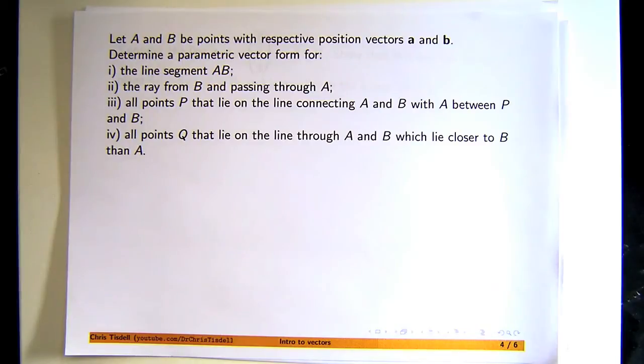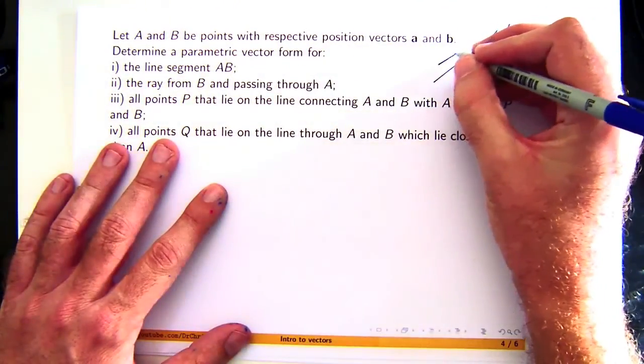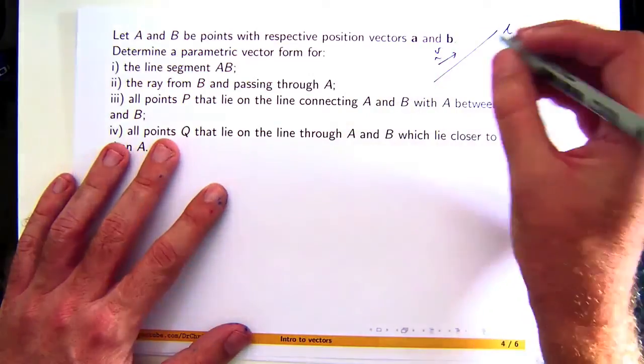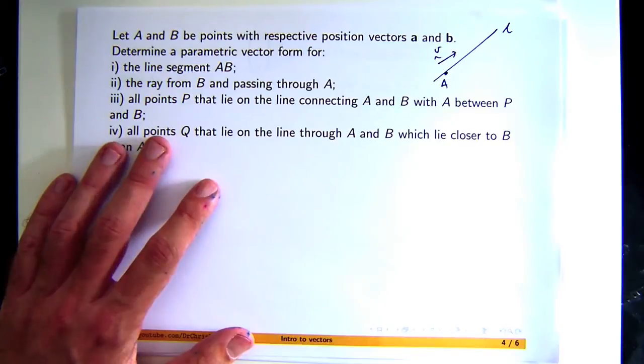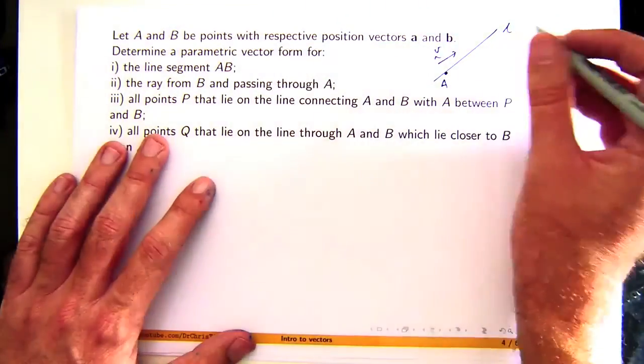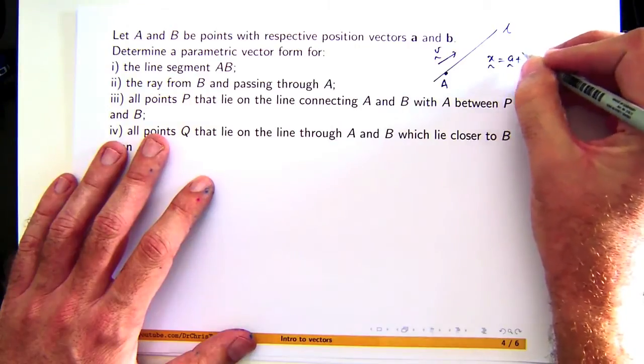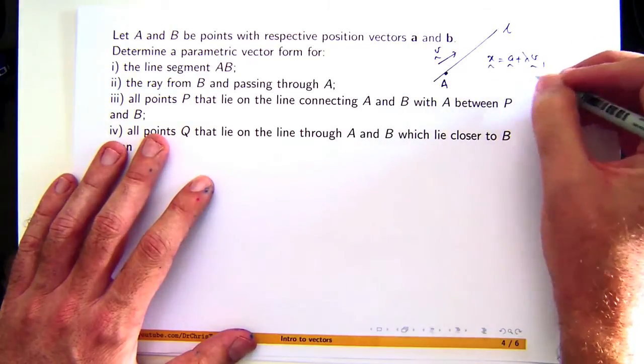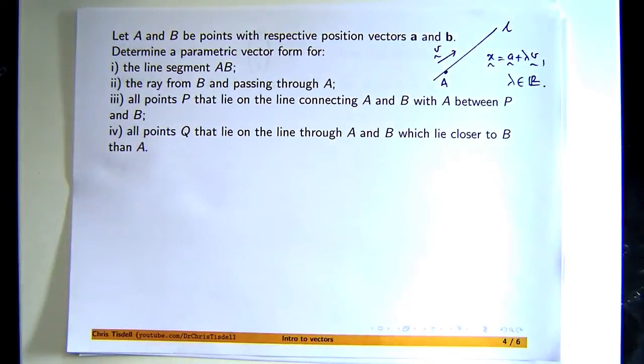For example, we know that for a line L that has a vector V parallel to it and say some point A on the line, we know that the parametric vector form is the following.